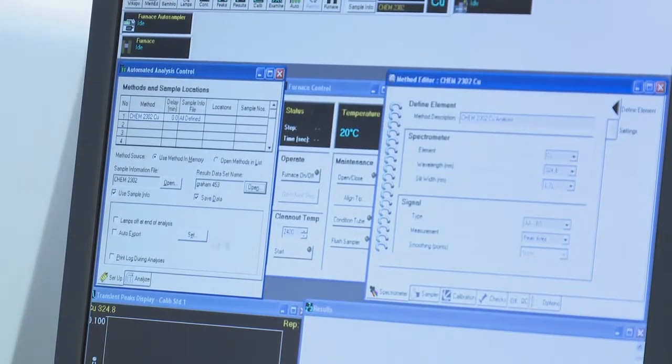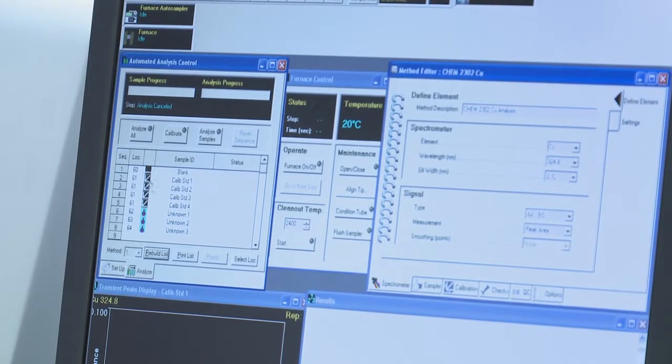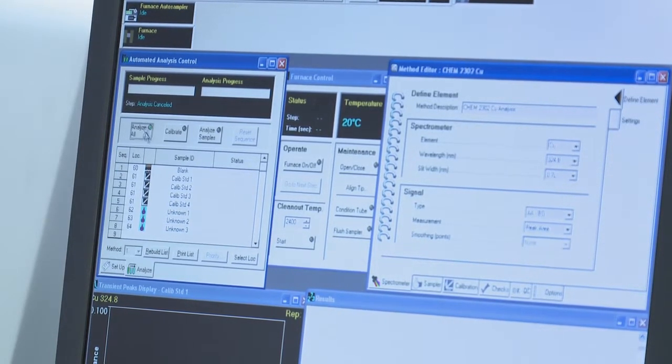And then you're going to come down to the analyze tab, click on the rebuild list, and then you're going to click on analyze all. That's going to start the run.